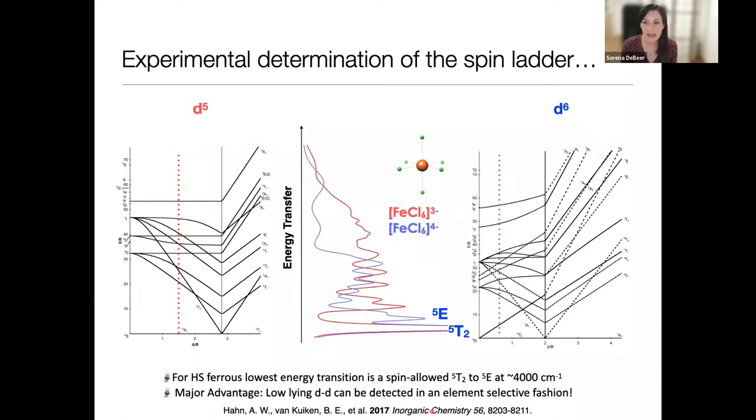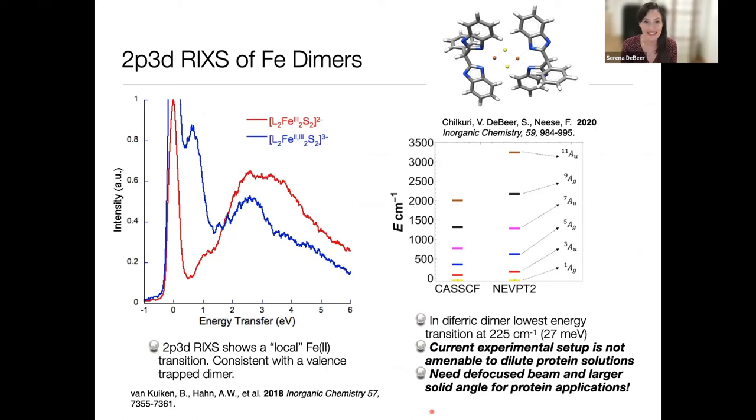If we reduce it and go to d6 octahedral, we predict a low-lying spin-allowed quintet-to-quintet transition. That's what we see here in blue. Then everything to higher energy is spin-forbidden transitions. I won't go through this in detail - this was published five years ago. But I'm highlighting that in principle, you can extract all the ligand field parameters and get energetics of all these d-d excited states, provided you have sufficient resolution. What happens when we go to iron-sulfur clusters? We can see a difference between an iron-2 iron-3 dimer and an iron-3-3 dimer. But unlike what we saw for the chlorides, we see these bands. This is consistent with what we see from theory - we expect a dense spin ladder. But we don't have the experimental resolution to separate this out.